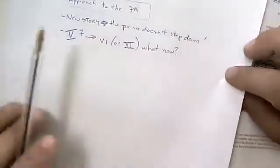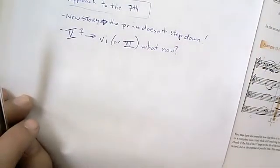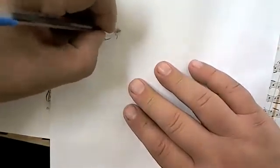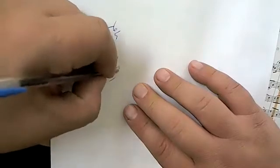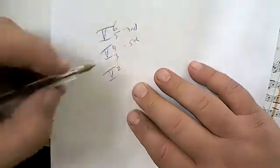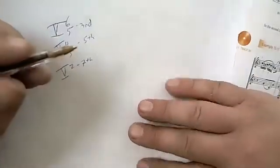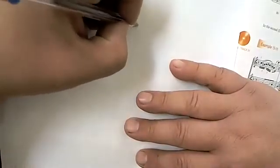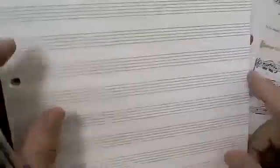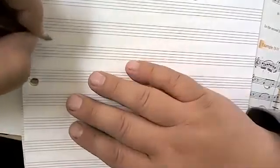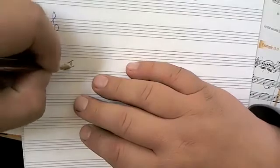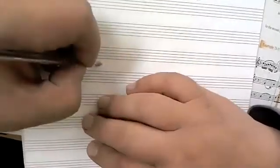Now there's the case of what happens when the prince doesn't step down, which involves inverted chords. When you have not a five-seven but a five-six-five, a five-four-three, or a five-two — meaning the third, fifth, or seventh is in the bass respectively — what do you do? The answer is the same as always: identify the characters and resolve them using the standard rules.